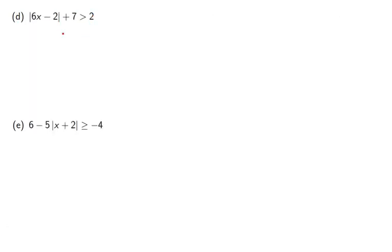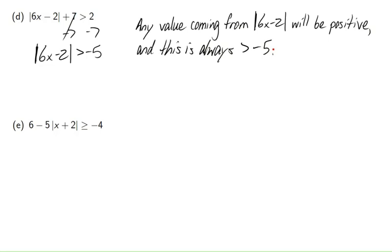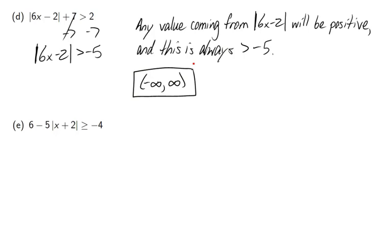Next example: the absolute value is not by itself, so subtract 7 from both sides. Again we end up with a negative value on the right, but this time the symbol is different. Anything coming out of an absolute value will be positive — is that bigger than negative 5? Of course it is. So any value of x gives a positive result, which is always greater than negative 5. Our solution is negative infinity to infinity — all real numbers. We can use the real number symbol ℝ to represent this.